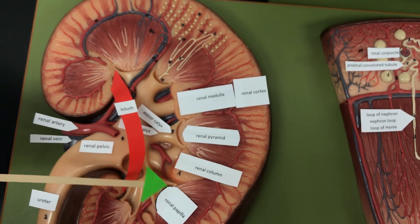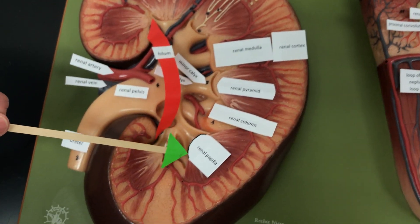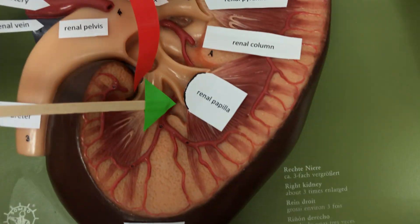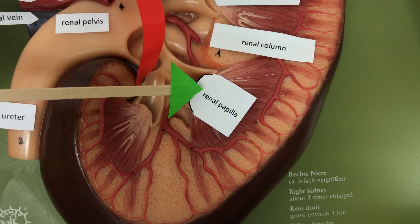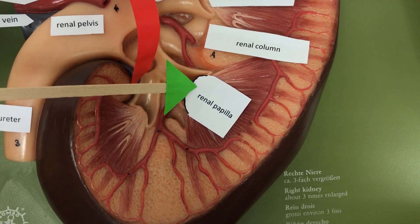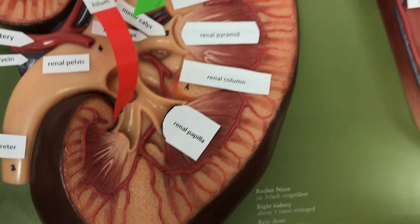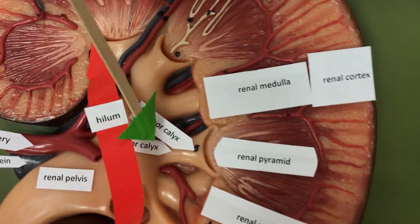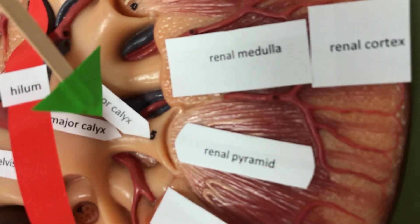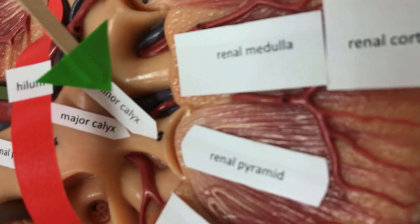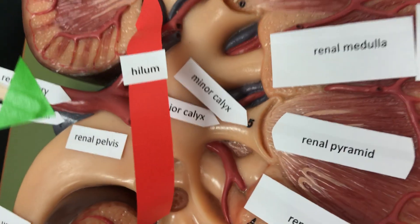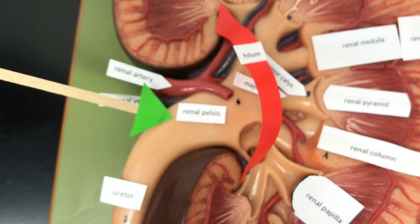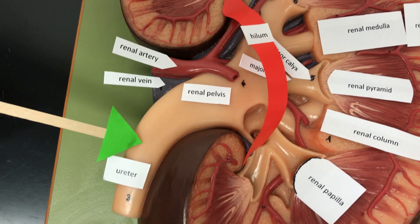At the apex of the renal pyramid we have a renal papilla. Each renal papilla is going to drain into the minor calyx, then the major calyx, and then into the renal pelvis, which is going to collect the urine.